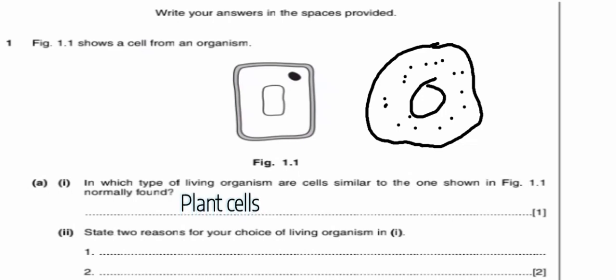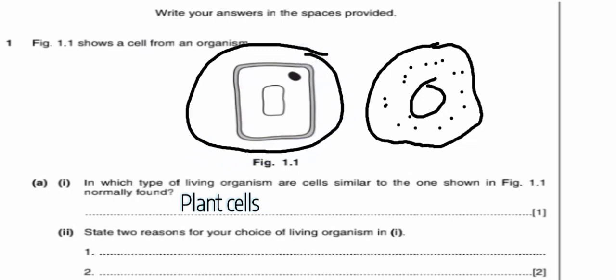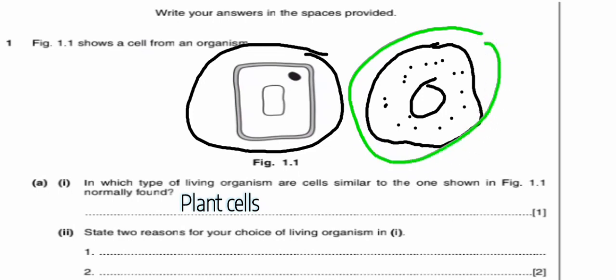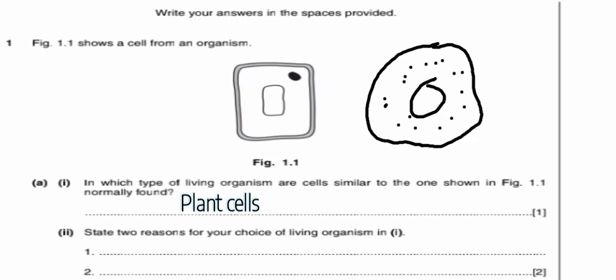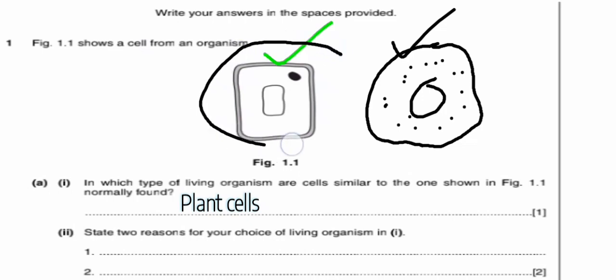For Roman numeral two, it is saying: state two reasons for your choice of living organism in Roman numeral one. If you compare the structures or the shape of an animal cell to that of a plant cell, you are going to find that a plant cell has a fixed shape and an animal cell has an irregular shape. So the reason why we are saying that this one is a plant cell is because it has a fixed shape — that's the first reason.